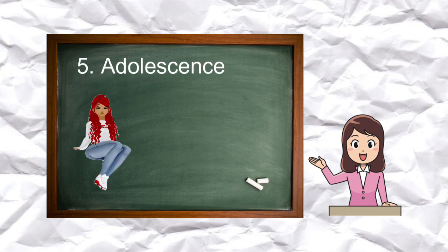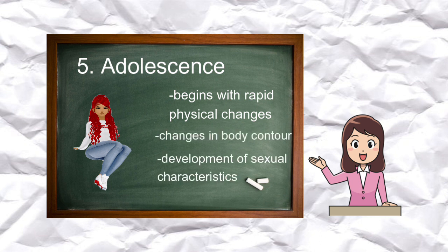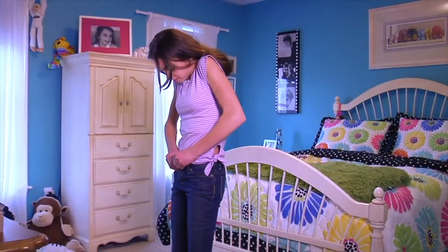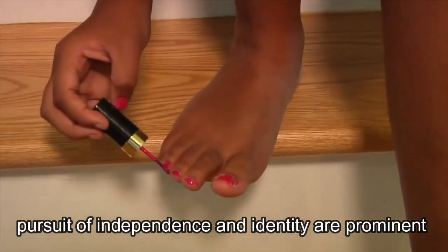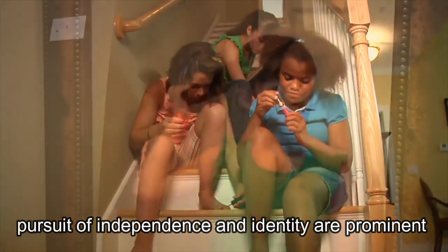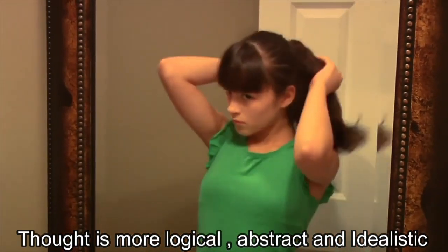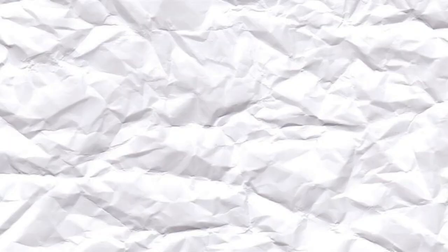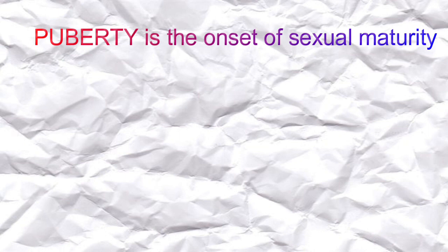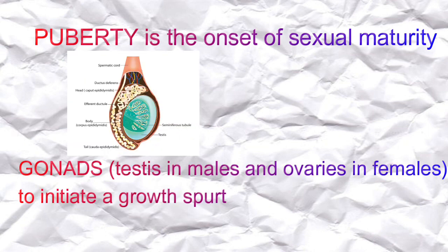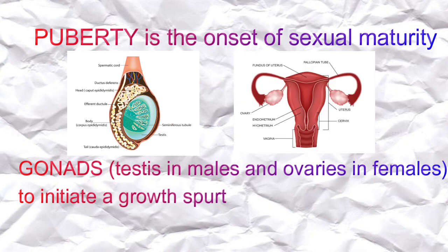Adolescence covers ages 13 to 18 years old. At this stage of human development, it begins with rapid physical changes — dramatic gains in height and weight, changes in body contour, and the development of sexual characteristics such as enlargement of the breasts, development of pubic and facial hair, and deepening of the voice. During adolescence, the pursuit of independence and identity are prominent. Thought is more logical, abstract, and idealistic. More time is spent outside of the family. Puberty is the onset of sexual maturity; gonads — testes in males and ovaries in females — initiate a growth spurt.